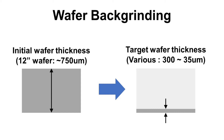For the wafer backgrinding process, we need to start with initial wafer thickness and target wafer thickness. Initial wafer thickness is the wafer thickness before backgrinding — it is around 750 micrometers for a 12-inch wafer. Target wafer thickness is the thickness after backgrinding, and it depends on device type and application. It can be 300 micrometers or down to 35 micrometers.